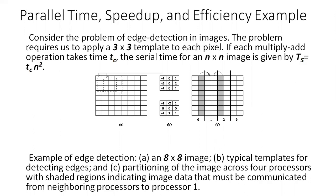What is this parallel time, speedup and efficiency example? In the last video, we saw what is parallel time — that is TP — what is speedup — that is capital S — and what is efficiency — that is capital E. Parallel time is the total time taken from startup to actual completion of an operation by all the processing elements. Speedup is the ratio of total time taken by the serial computer to the total time taken by the parallel computer to solve the same problem: S = TS / TP.